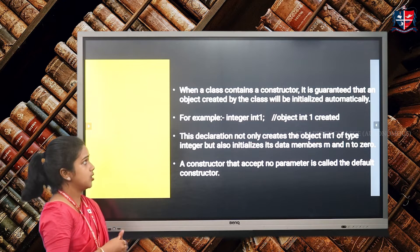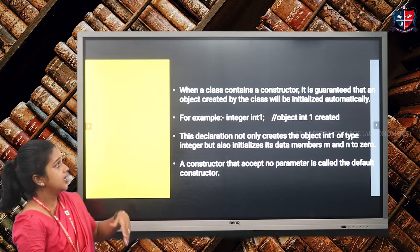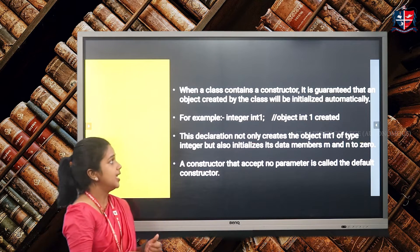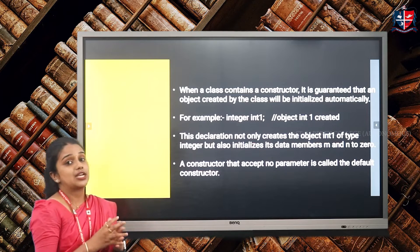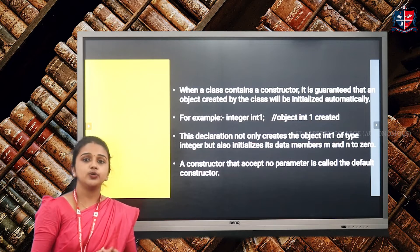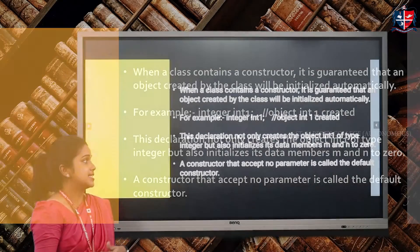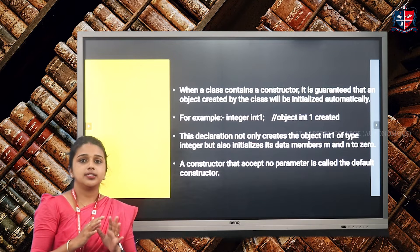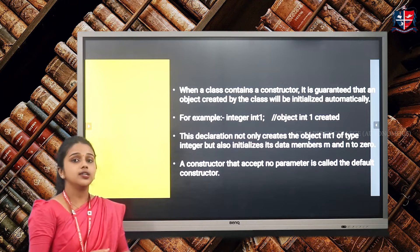Whenever we have a constructor, the objects of the class are automatically initialized. For example, we have a class called integer and int1 is an object of that class. Whenever we create the object int1, it not only creates the object but also initializes the data members m and n to 0. This kind of constructor which accepts no parameter — where the parameter portion is empty and it returns nothing — is called a default constructor.